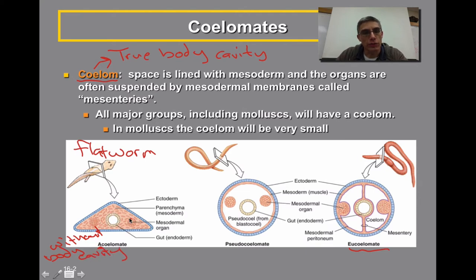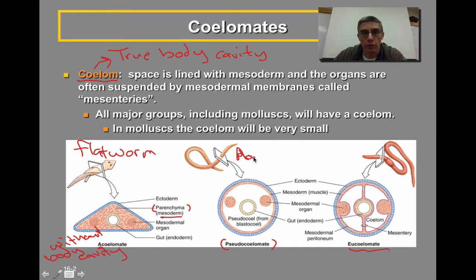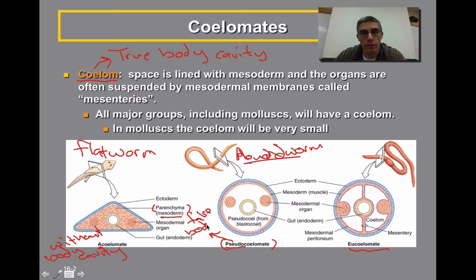Flatworms had a gut tube surrounded by a very compact amount of parenchyma, and that parenchyma was mesodermal in origin — that third germ layer we discussed in Chapter 14. The animals discussed in Chapter 15 were considered pseudocoelamates — the roundworm you see right here. It's considered a pseudocoelamate because it has what we call a false body cavity. It's considered false because there is no mesoderm tissue that actually surrounds the gut tube of this animal. It does have a cavity, but the key difference is there's no mesoderm tissue located there.